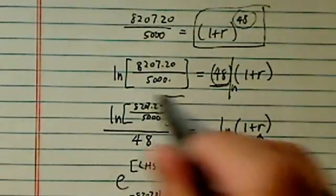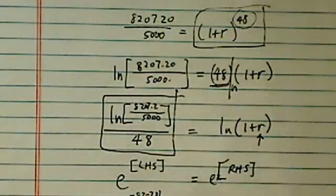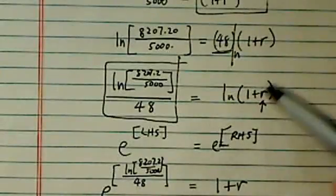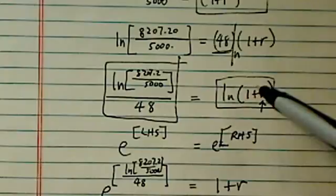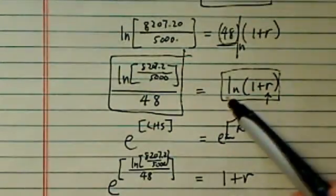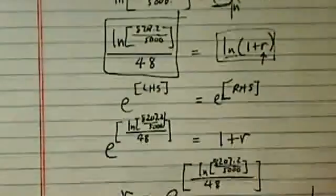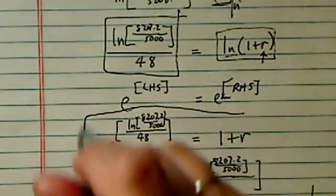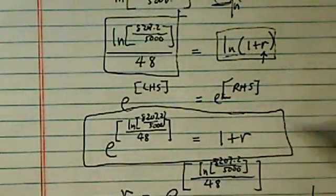Once we take the 48 down, this whole side will become a number. But the R is still buried into the natural log. From there, I took e to both sides to get rid of the natural log. And then this is the 90% of work is done here.